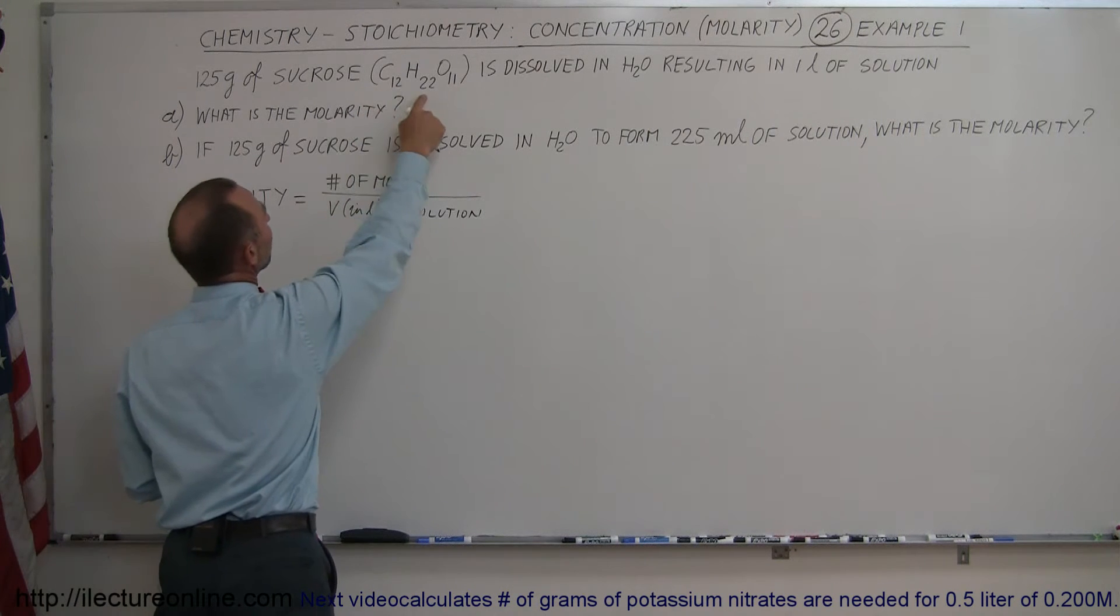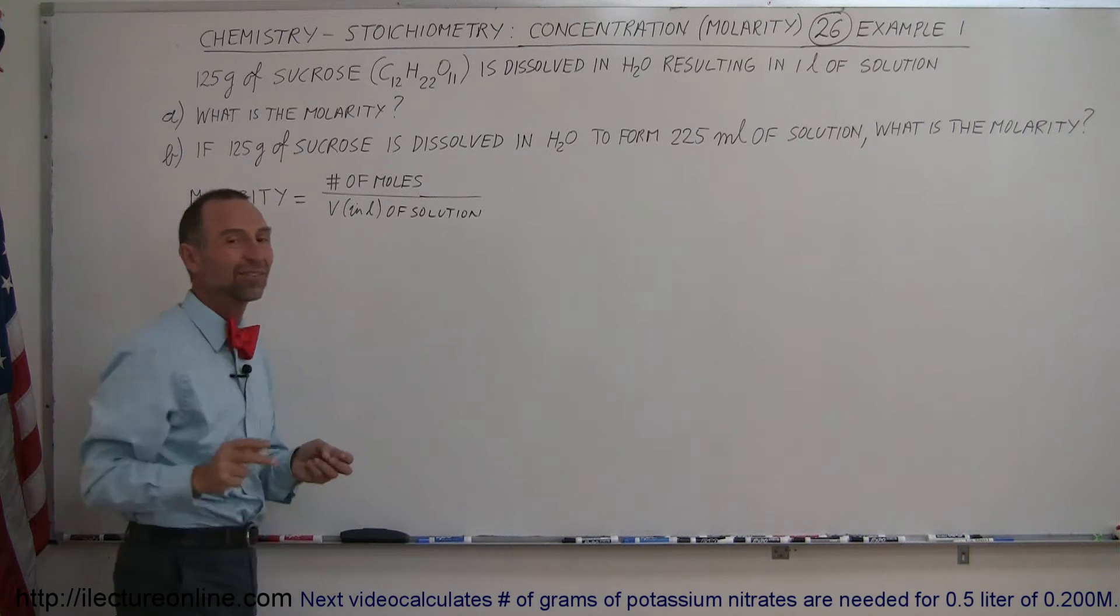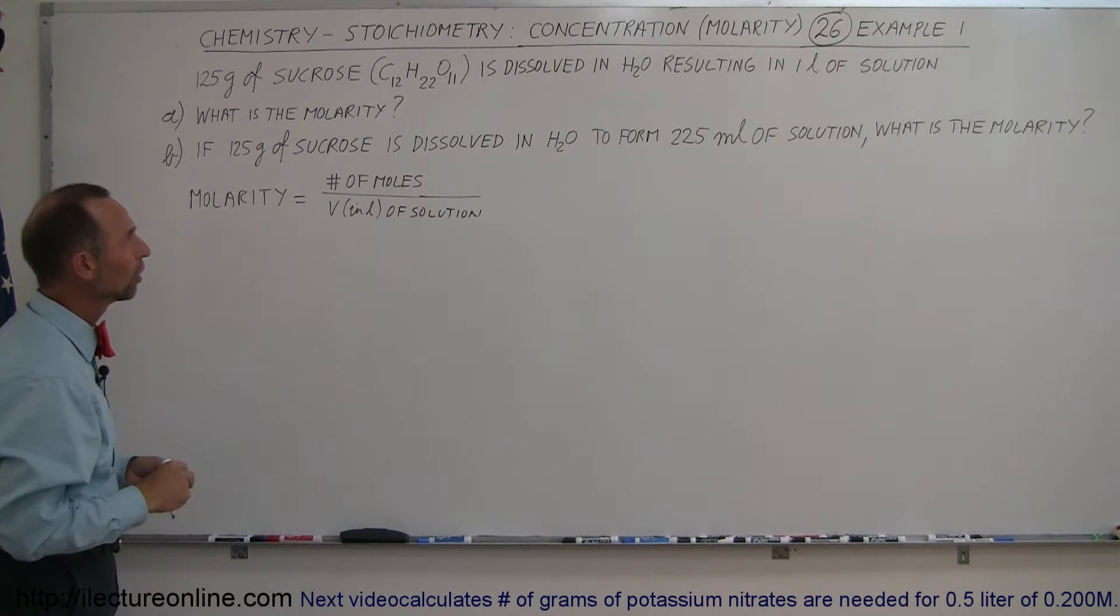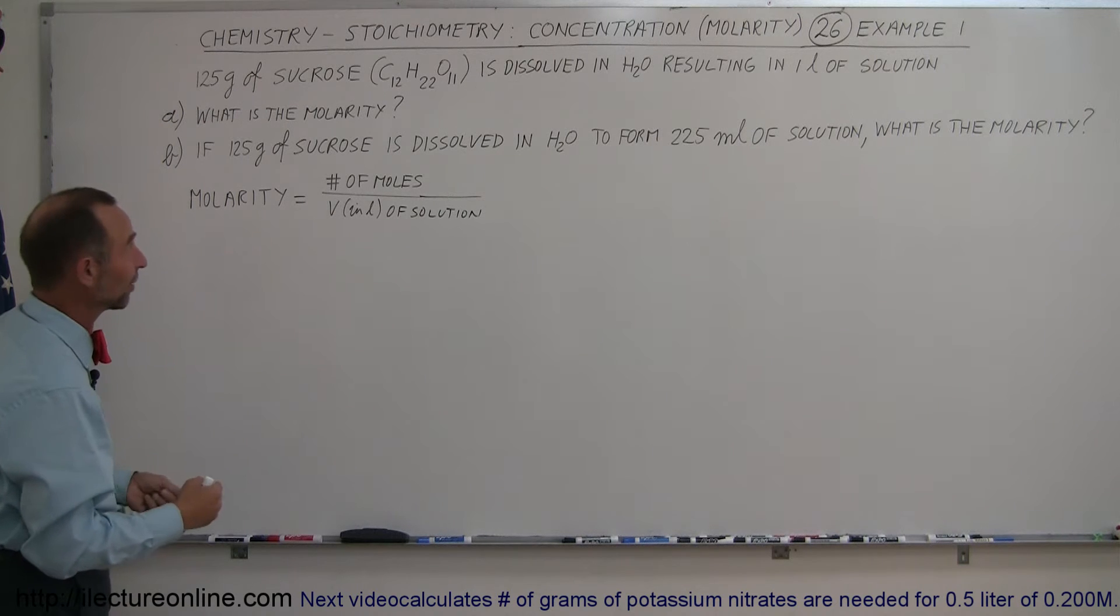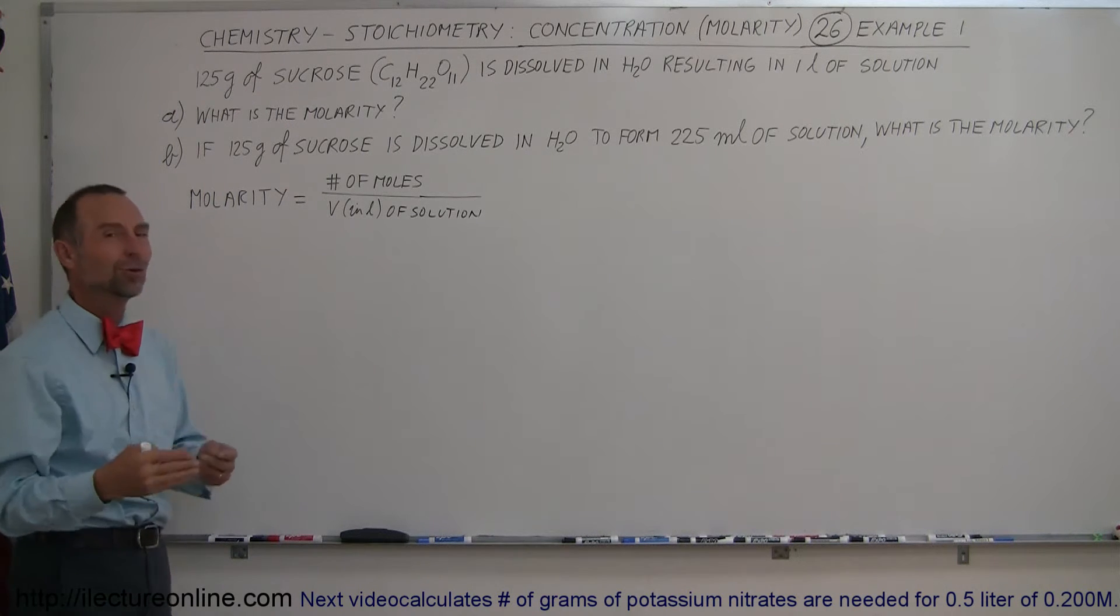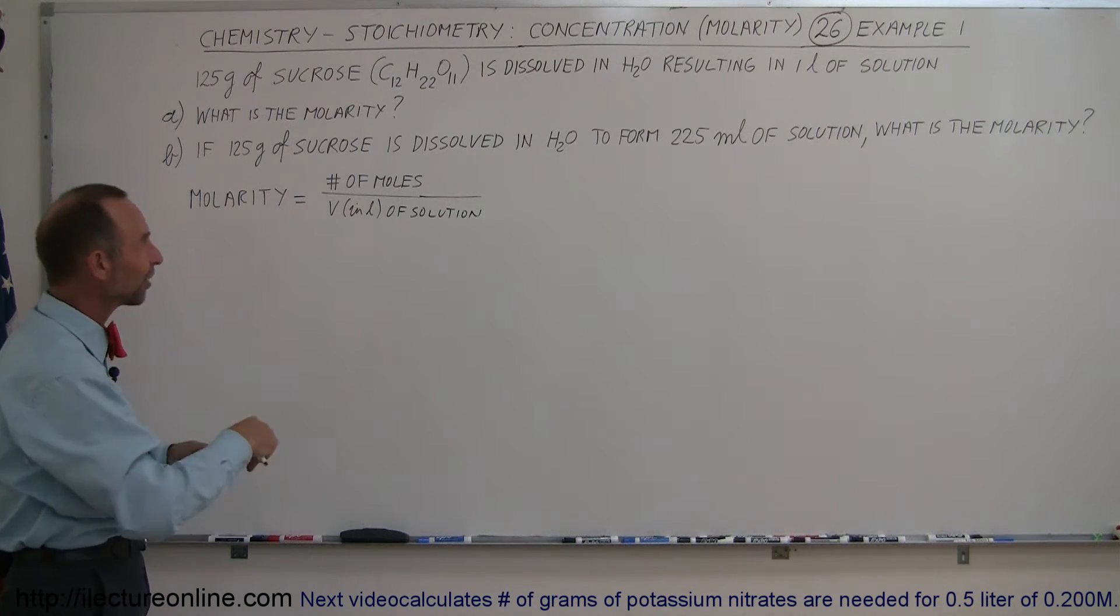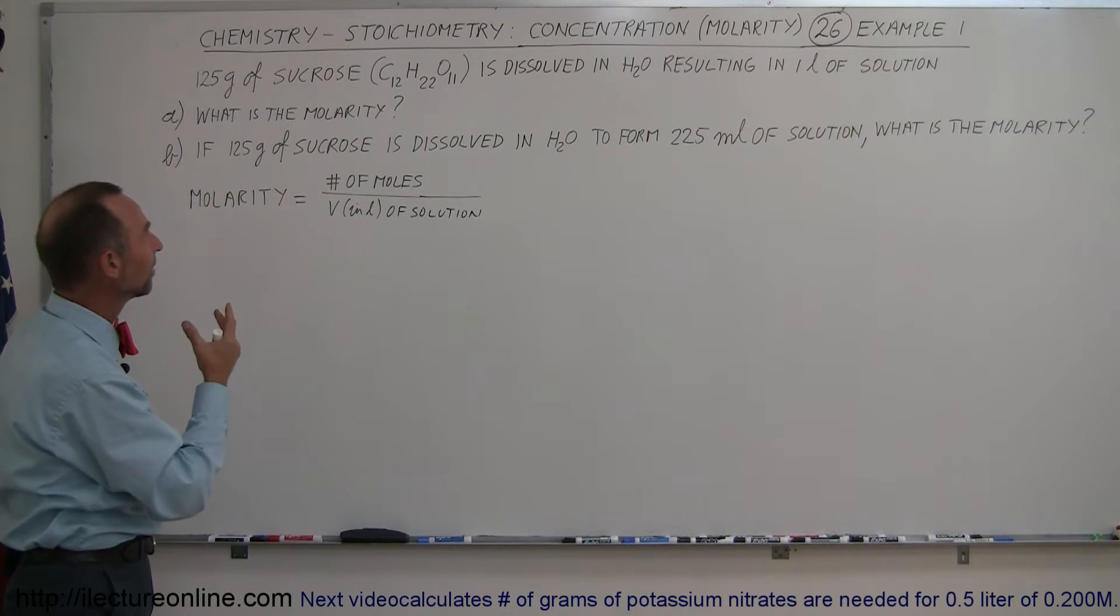So we have 12 carbons, 22 hydrogens, and 11 oxygens in a single mole of sucrose. I should say 12 moles of carbon, 22 moles of hydrogen, and 11 moles of oxygen in a mole of sucrose. So what would be the molar mass? Well, let's start with that.